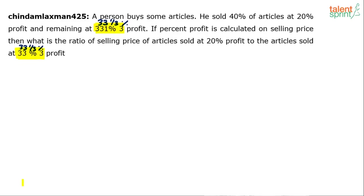Lakshman, you've posted the question again in the chat — you're saying 20% profit and remaining at 33⅓% profit. Okay, let's solve this. A person has bought some articles; he sold 40% at 20% profit and remaining at 33⅓% profit. Let us assume the person has bought 100 articles and each costs 100 rupees, so total cost price is 100 times 100.